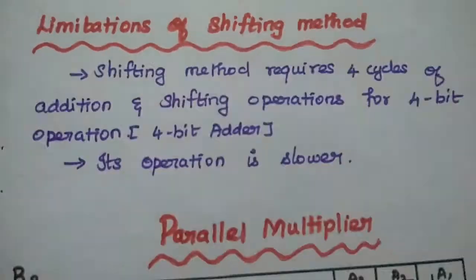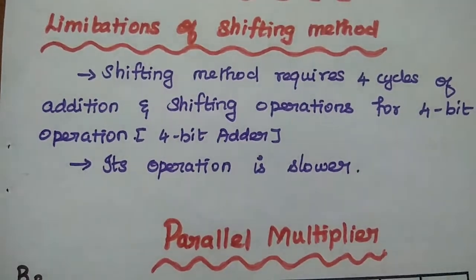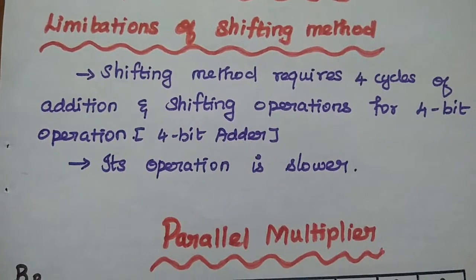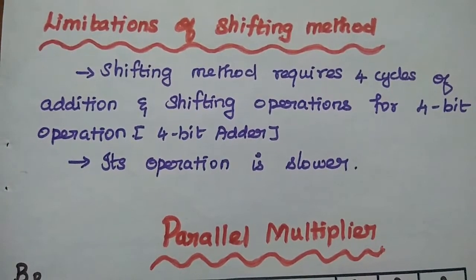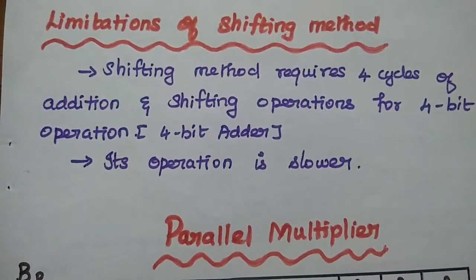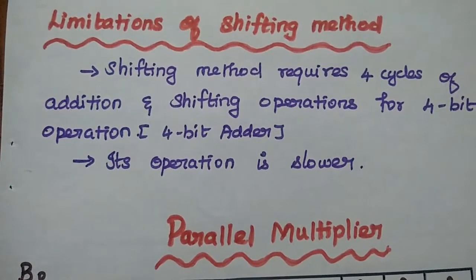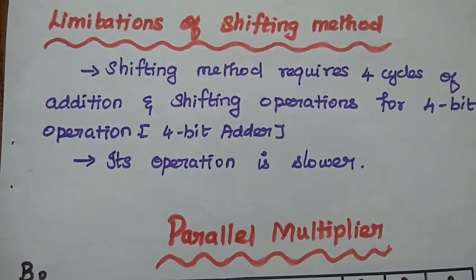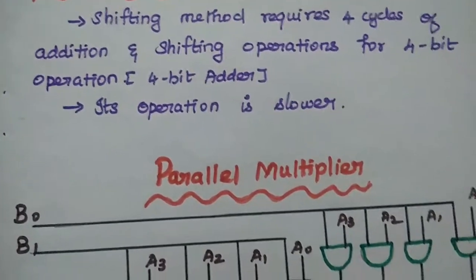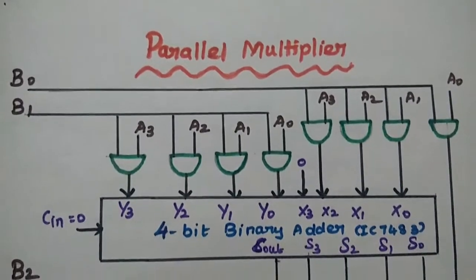But there are some limitations of the shifting method. In order to perform a 4-bit binary multiplication, the shifting method requires 4 cycles of addition and shifting operations. This slows down the multiplication process. To overcome this limitation, we use the parallel multiplier.